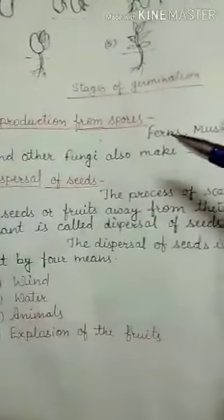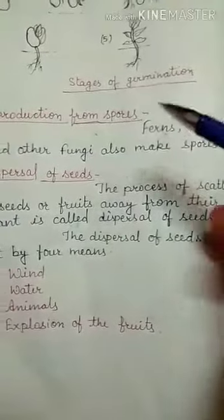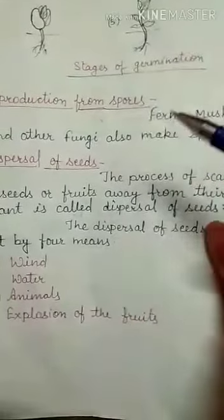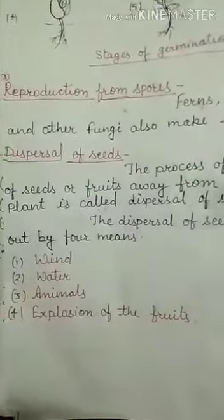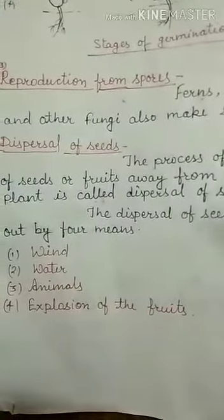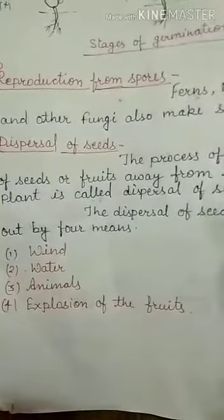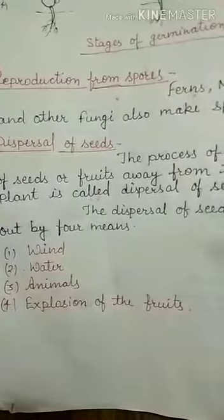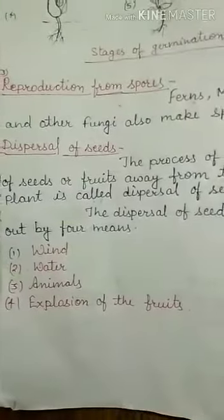Next is reproduction from spores. Some plants do not have flowers; they make spores. Each spore can grow into a new plant. Ferns, mushrooms, and other fungi also make spores.